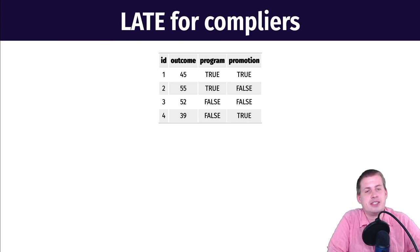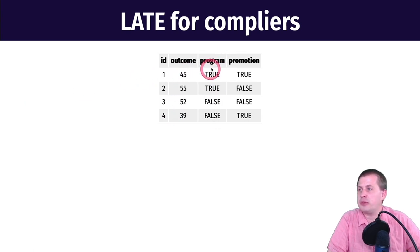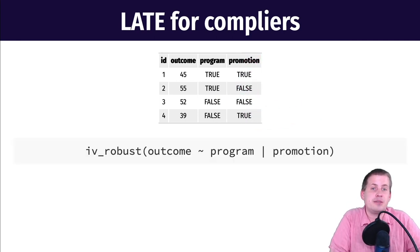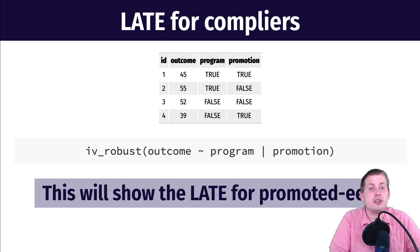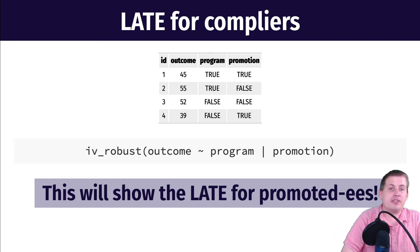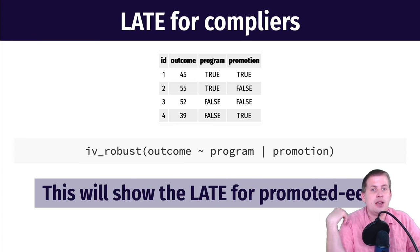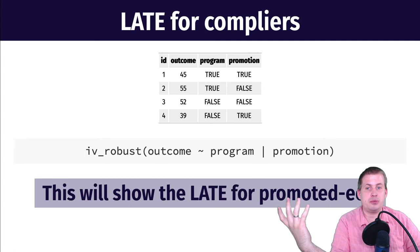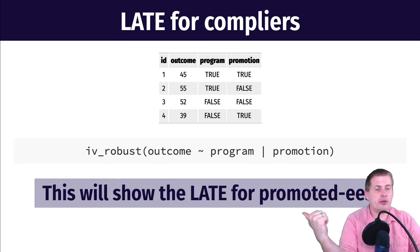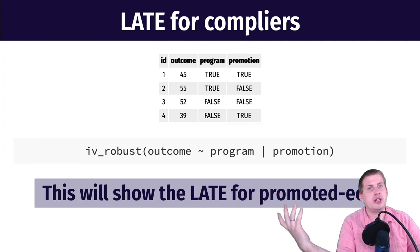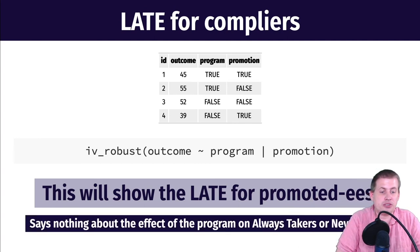If you imagine a dataset with lots of people — some outcome, whether or not they enrolled in the program, and whether or not they were told to enroll — and you run a regression where the outcome is explained by the program but you use promotion as an instrument, that will show the local average treatment effect for people who received the promotion. So people who had somebody show up at their door and say 'you should do this thing' — we can find the causal effect of this program for those compliers.